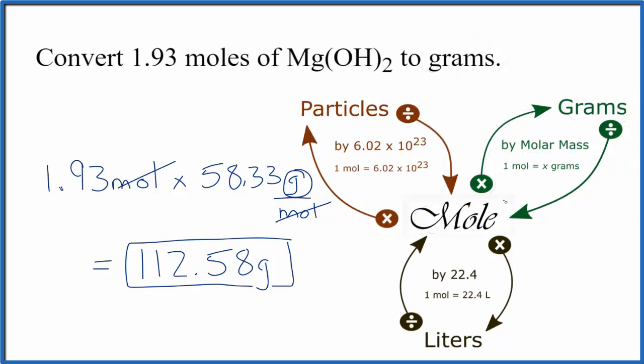So to recap, we had moles and wanted to find grams. So we multiplied by the molar mass of Mg(OH)2, magnesium hydroxide. The moles canceled out, and that left us with grams.